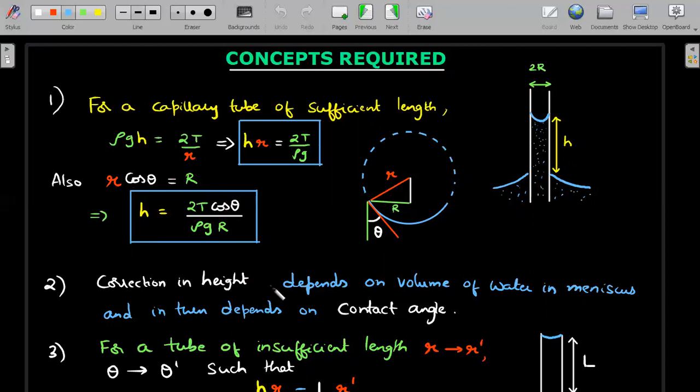Second one, the correction in height. You should understand when we are writing this number, this height h is taken from the bottom of the meniscus to this particular position. That means there is some water that we have left out in the meniscus. And that amount of water leads to the correction in the height calculation. So this h that you calculate is slightly higher and you're supposed to subtract some number. And this depends on the volume of the water in the meniscus. The volume of water in that small shaded region is going to decide that, which in turn obviously depends on the contact angle. Very important point that you need to know.